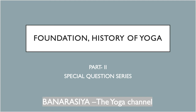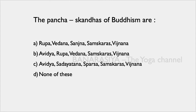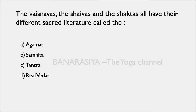Today's first question: What are the Panch Skandhas of Buddhism? Option A is Roop, Vedna, Sanjana, Samskara, Vijnana. Option B is Avidya, Roopa, Vedna, Samskara, Vijnana. Option C is Avidya, Sadayatna, Sparsha, Sanskara, Vijnana. Option D is none of the above. The correct answer is Option A: Roopa, Vedna, Sanjana, Samskara, and Vijnana.